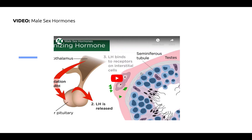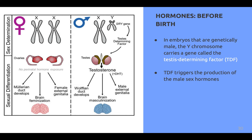Regarding hormones before birth: in embryos that are genetically male, the Y chromosome carries a gene called the testes-determining factor, or TDF, which triggers the production of the male sex hormone. Sex determination occurs at the moment of conception — the embryo either receives two X chromosomes, making a female embryo, or an X and Y chromosome, making a male embryo. If the developing embryo has a Y chromosome, it contains the sex-determining region called the SRY gene, which encodes for a protein known as the testes-determining factor.